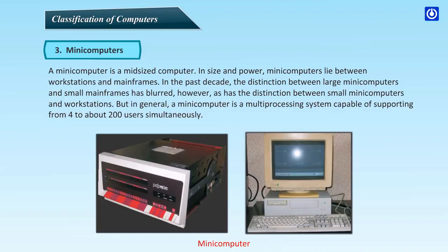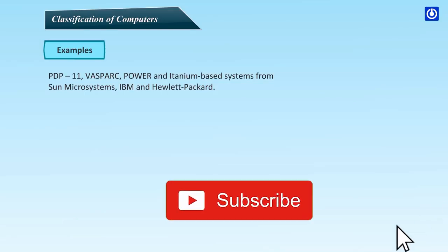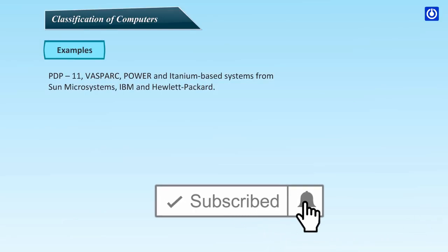In general, a minicomputer is a multiprocessing system capable of supporting from 4 to about 200 users simultaneously. Examples include PDP-11, VASPARC, and Power and Itanium-based systems from Sun Microsystems, IBM, and Hewlett-Packard.